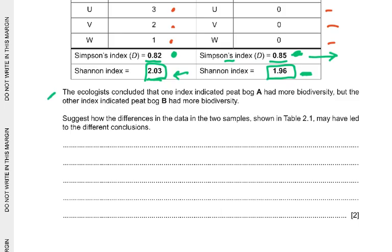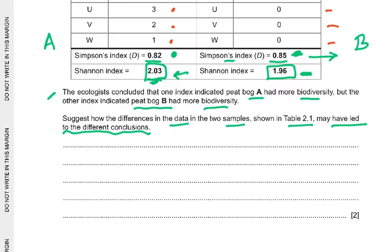The ecologists concluded that one index indicated peat bog A has more biodiversity, while the other index indicated peat bog B has more biodiversity. The question asks you to suggest how the differences in the data and the two samples shown in Table 2.1 may have led to the different conclusions.